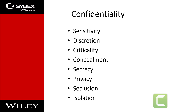If a security mechanism offers confidentiality, it offers a high level of assurance that data, objects, or resources are restricted from unauthorized subjects. If a threat exists against confidentiality, unauthorized disclosure could take place. An object is the passive element in a security relationship, such as files, computers, network connections, and applications. A subject is the active element, such as users, programs, and computers. A subject acts upon or against an object.